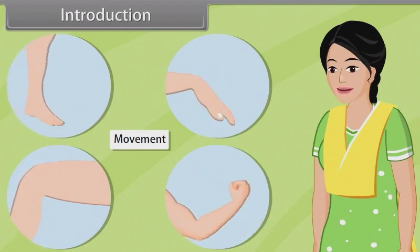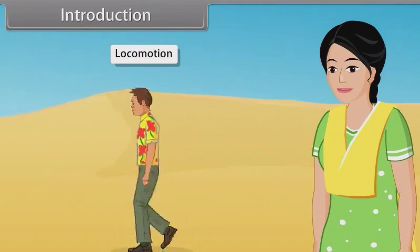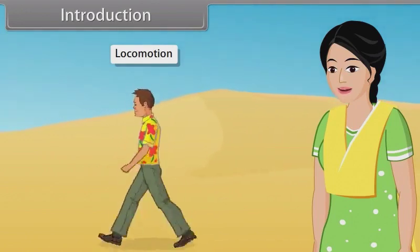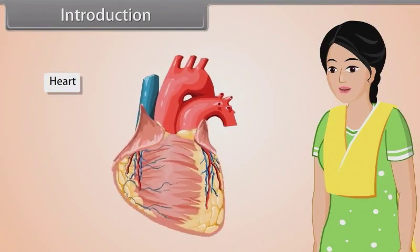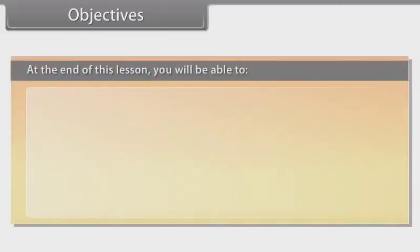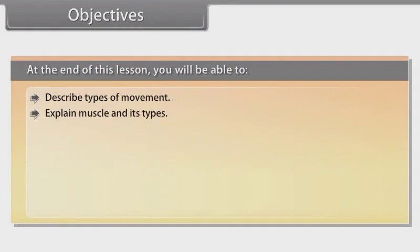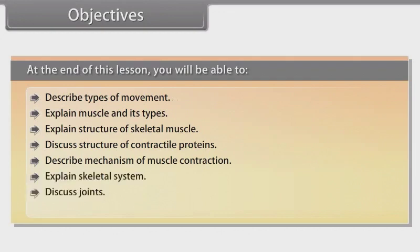Introduction. Objectives. At the end of this lesson, you will be able to: describe types of movement, explain muscle and its types, explain structure of skeletal muscles, discuss structure of contractile proteins, describe mechanism of muscle contraction, explain skeletal system, discuss joints, and list disorders of muscular and skeletal system.